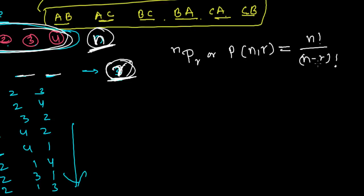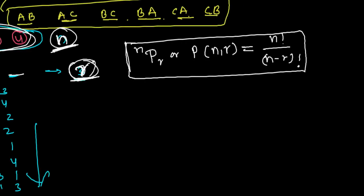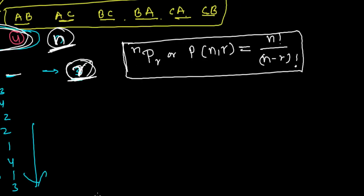You might be wondering how I derived this formula. The proof I will make in the next video. But right now I'm going to show you how to use it. Let's say we have three different color boxes — a pink color box, a brown color box, and a red color box — and we have to color a flag with two different colors out of them.